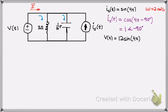We also have the voltage, which was given, and we can convert that into cosine form as well. Taking the magnitude and converting into phasor form — it's the same thing, just with 12 in front.